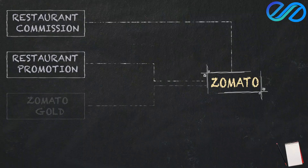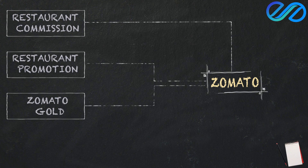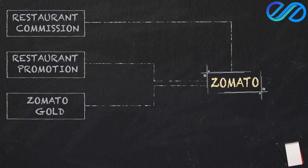That is a subscription — Zomato Gold. If you go to restaurants, 1+1 is free. If you go to restaurants, there are great offers. It is a yearly subscription — a small amount of around 300-500 rupees. That's why it is a revenue source, contributing about 3 to 5% of total revenue. It is a small amount from Zomato Gold.